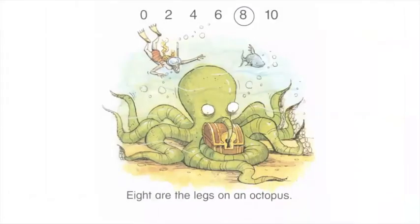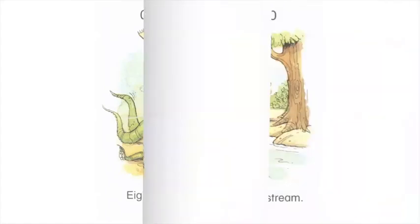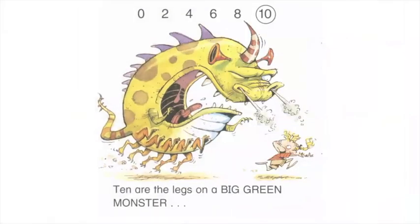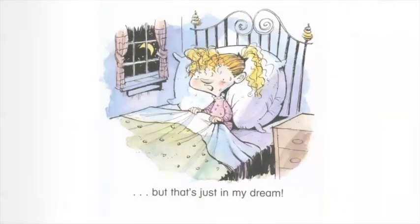Eight are the legs on an octopus and the legs on a spider by a stream. Ten are the legs on a big green monster — but that's just in my dream. Zero,